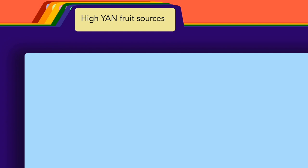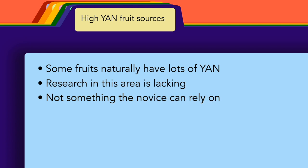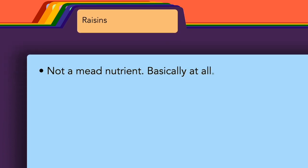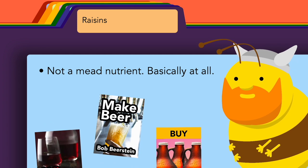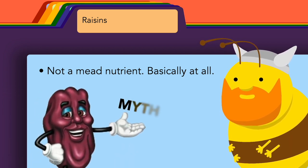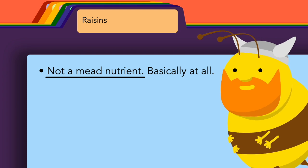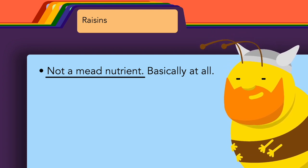High YAN fruit sources: there are a few fruit sources, like mangoes, that are naturally high in YAN. However, currently there's not a lot of available, reliable information on YAN content by individual fruit. For this reason, I would recommend mostly ignoring the YAN contribution of fruit unless you have a very good idea of its YAN content. Raisins: this is a myth popularized by the inundation of homebrewing books that flooded the American market when President Jimmy Carter legalized homebrewing. We now know that raisins do not have significant amounts of YAN and therefore are not a proper yeast nutrient. Think of it this way — if YAN is regularly added to commercial wine musts fermented on the skins, why would a handful of dried-up grapes ever be a good nutrient?